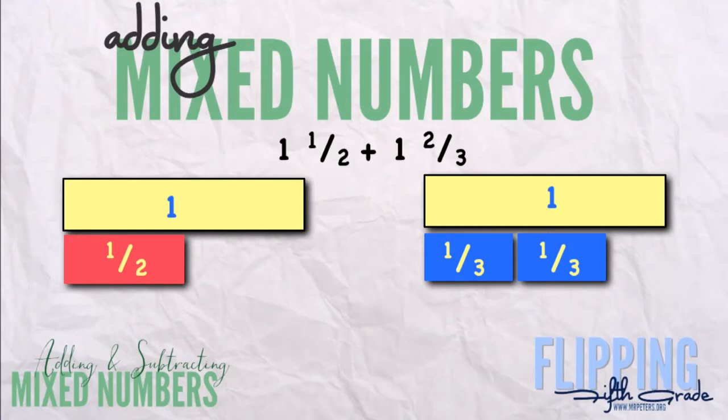One and a half plus one and two thirds. To do this problem, we're going to use these tiles. So I have a one tile, a whole tile, and a half. I have a one and two thirds. All right, so let's look at it.